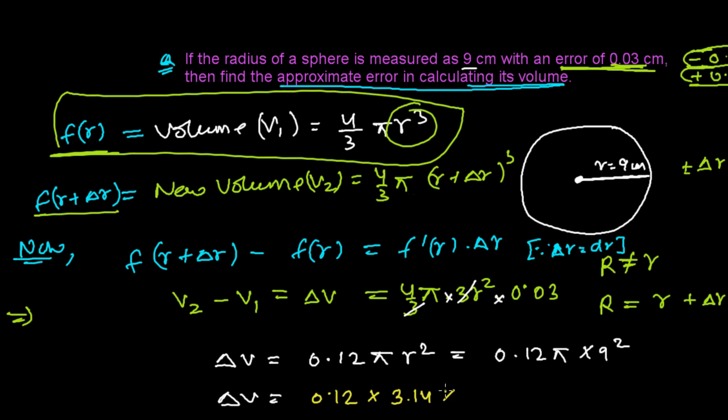So ΔV equals now 0.12 × π, that is 3.14, times 9 squared, that is 81.